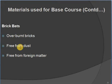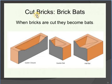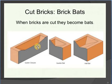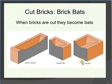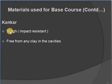Brick bats are also used in base course: overburnt bricks free from dust and foreign matter. Brick bats are cut bricks — when a full brick is cut in half, the half portion is called a 'closer'; cut to a quarter gives a 'quarter bat.' These are used in road construction for the base course.